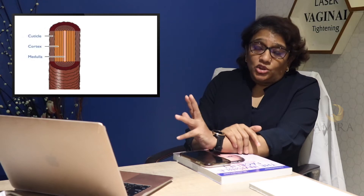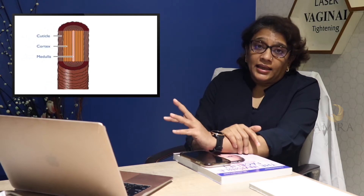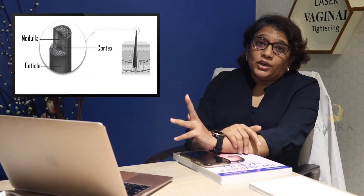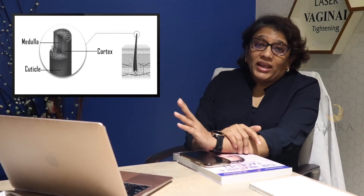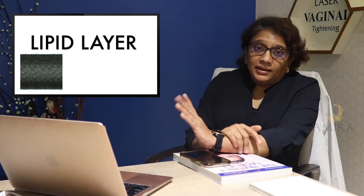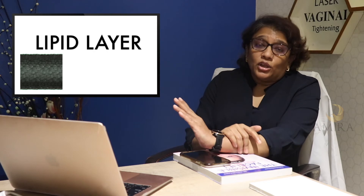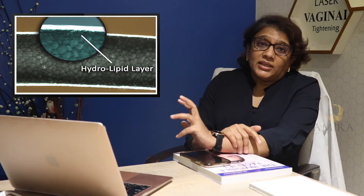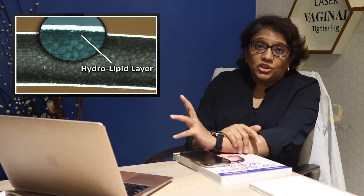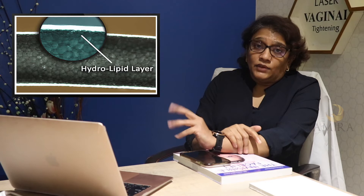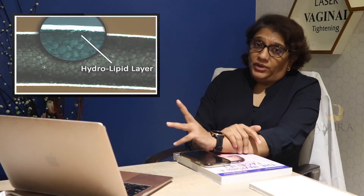The outer layer, the cuticle, is hydrophobic — when it is intact, there is a lipid layer on top so it is water resistant. But if the cuticle is damaged, the more the damage, the more the lipid layer is lost and the cuticle becomes hydrophilic.